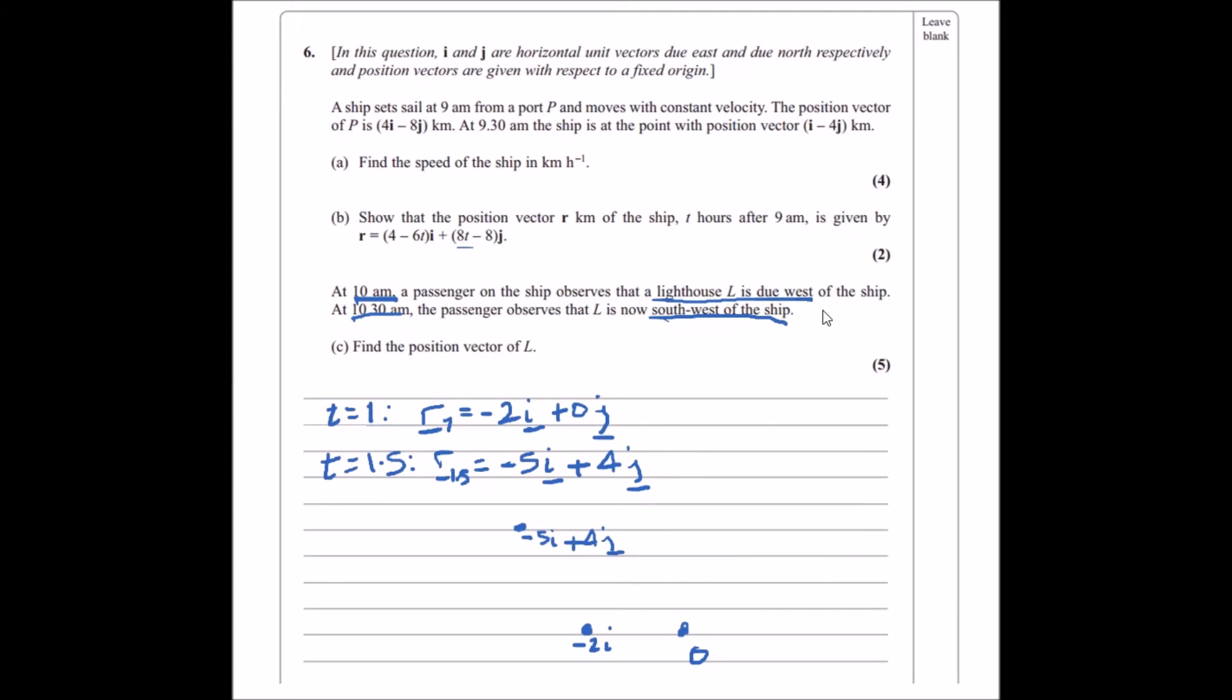This is where things get interesting. At the first position, the lighthouse is due west, so it's somewhere exactly west. At 10:30, it's exactly southwest. What does southwest mean? It means that the south and west distances are the same, so when you go down one block and left one block, you're exactly southwest.